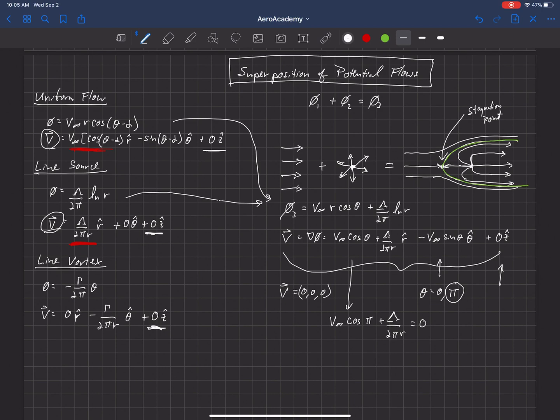So cosine of π is minus 1. So we can just rewrite this as lambda over 2π r equals V infinity. And then we can solve for r. So that gives r equals lambda over 2π V infinity. So this is useful because now we can choose a strength lambda and velocity V infinity that gives us a stagnation point at a certain location in the flow.